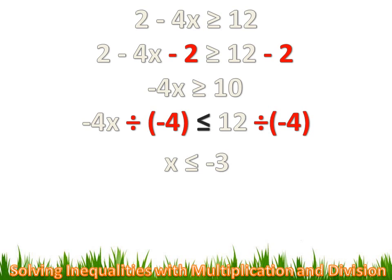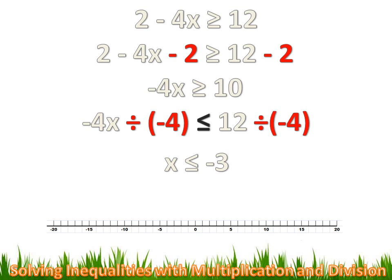Now let's graph that on a number line. Start at -3. Since it's less than or equal to -3, it includes -3, so put a closed circle on -3. The filled circle means -3 is included in the solution set. Then draw an arrow to the left, toward the smaller numbers.